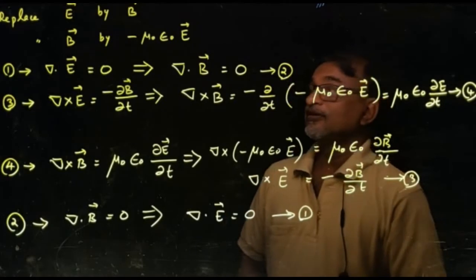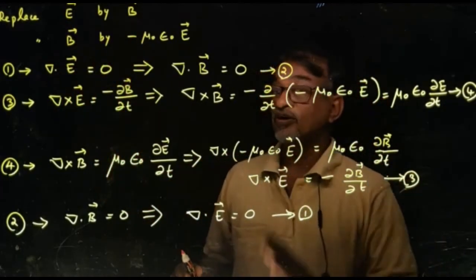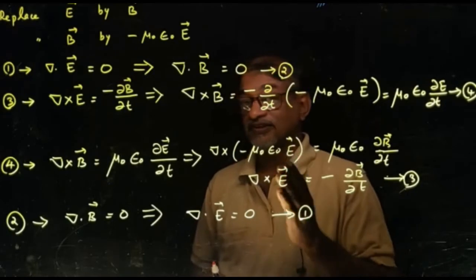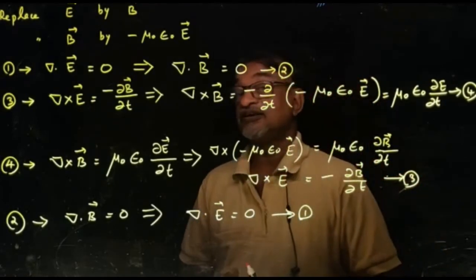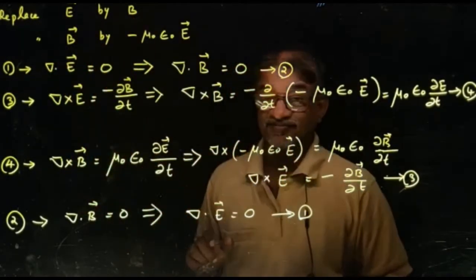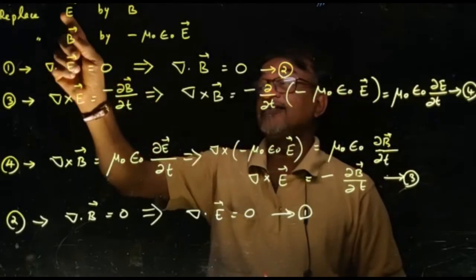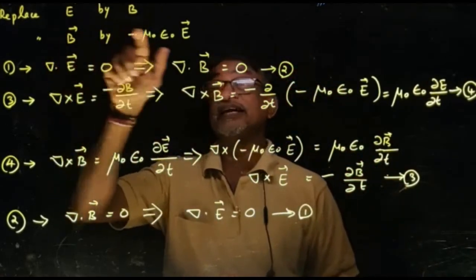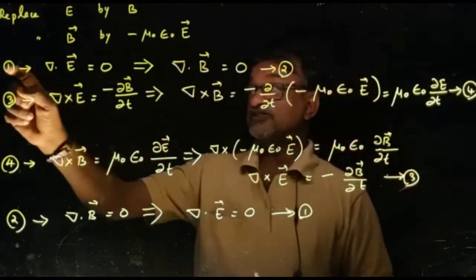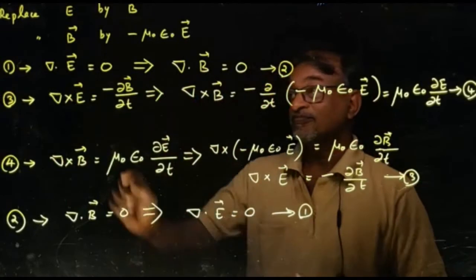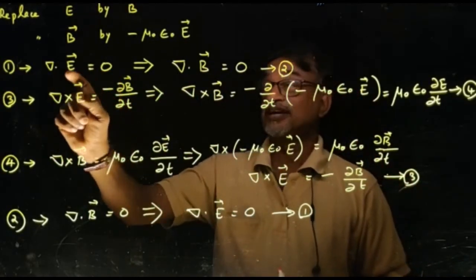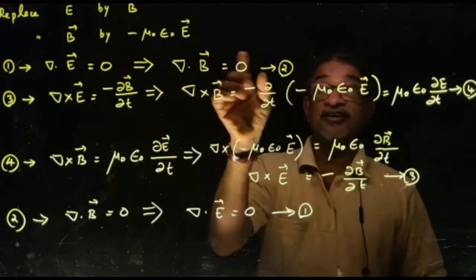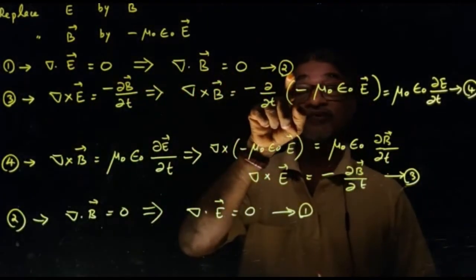Now we take these four free space equations and try replacing E with B and B with −μ₀ε₀E. We are writing the electric field in terms of the magnetic field, and the magnetic field B in terms of the electric field E. When E is transformed into B, equation 1 transforms into equation 2.